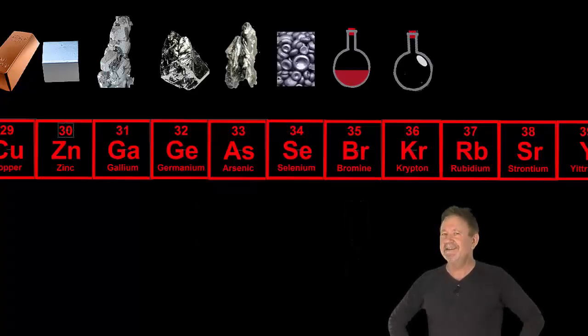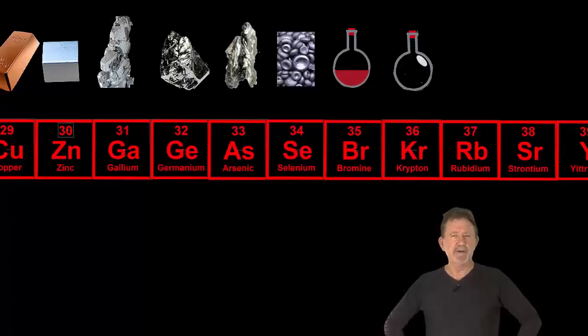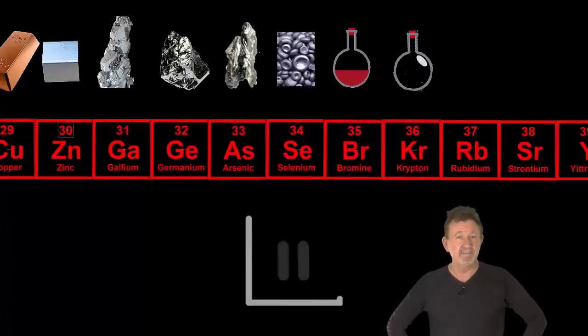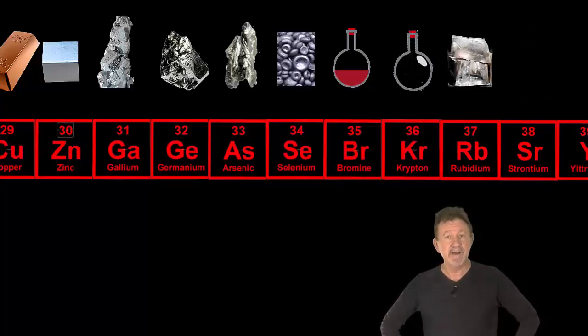Krypton is yet another colorless inert gas. So can you guess what kind of element rubidium is? It's a soft shiny metal, of course. This is getting repetitive.